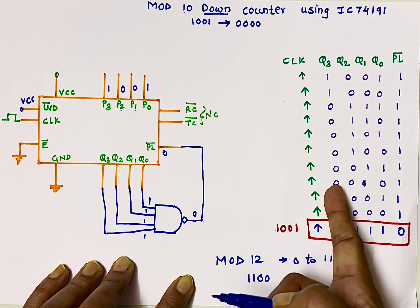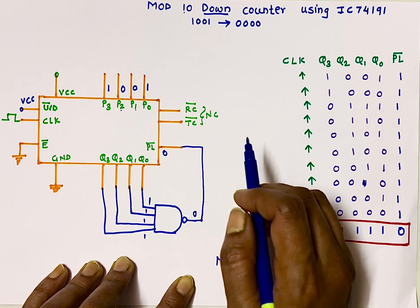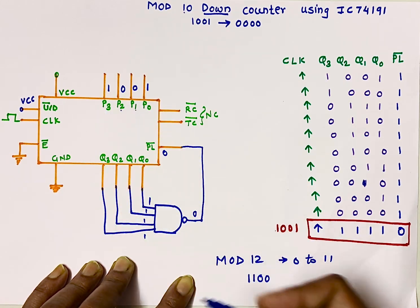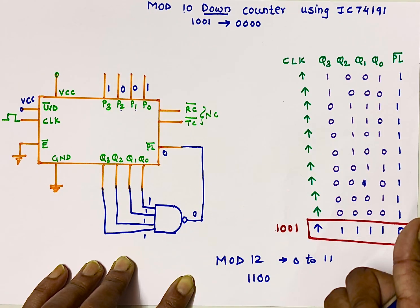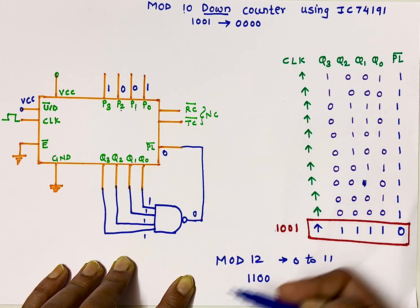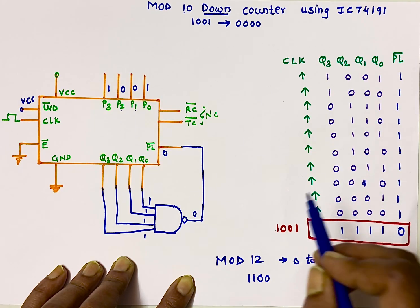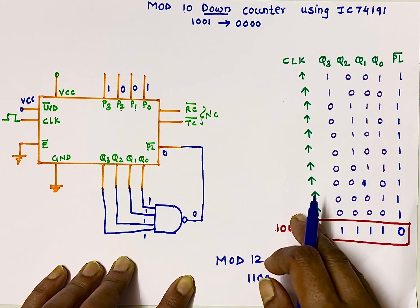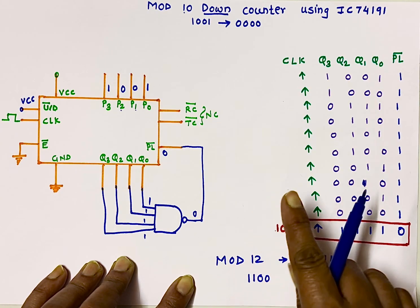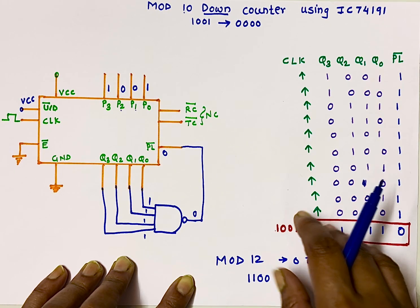In summary, IC 74191 is a synchronous counter, meaning a single external clock drives all 4 internal flip-flops. It is a binary counter counting from 0000 to 1111, giving mod 16 capability with 16 clock pulses from 0 to 15. If you like this video, press the like button, share it with your friends, and don't forget to subscribe to my channel. Thank you so much for watching.